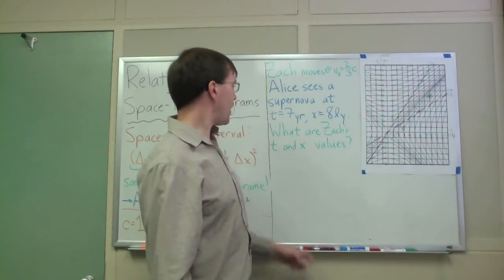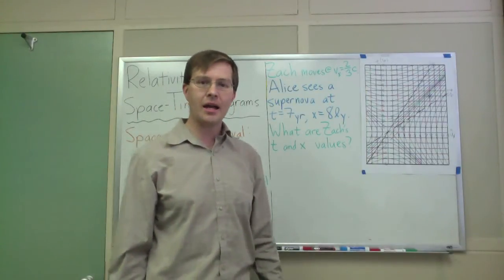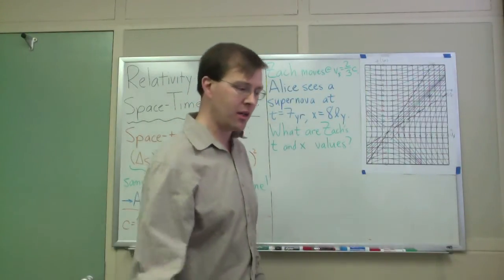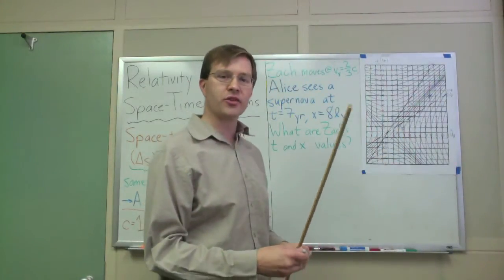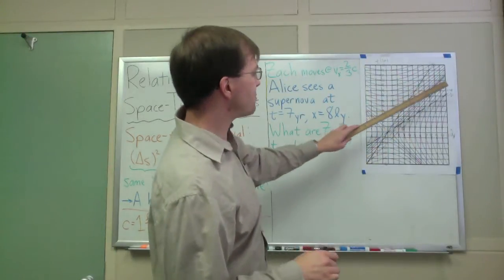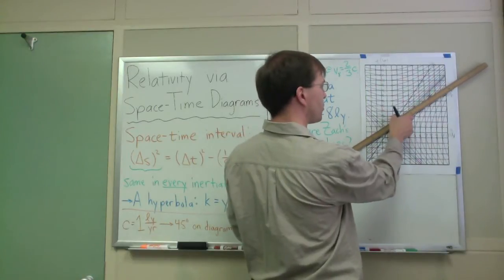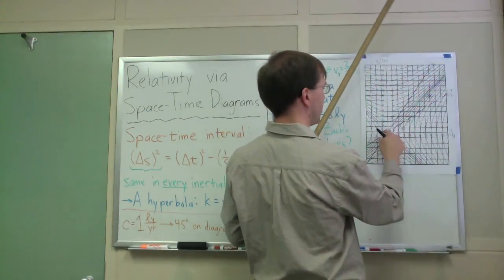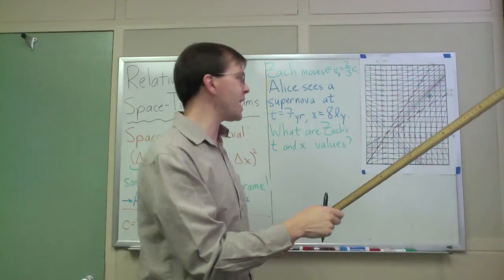And to begin with, I want to know, what are Zach's t and x values? Well, to find Zach's time, it's actually really easy. We know that simultaneous events for Zach correspond to lines at this particular slope, at this slope of 2/3, so two layers up for every three light years over. That is simultaneity for Zach.